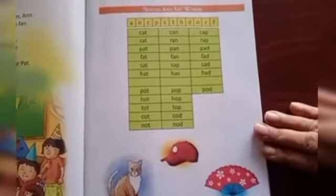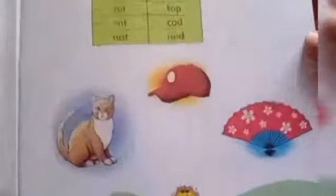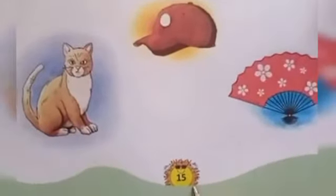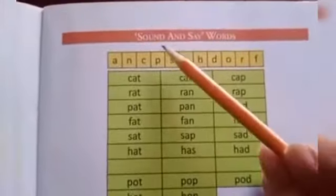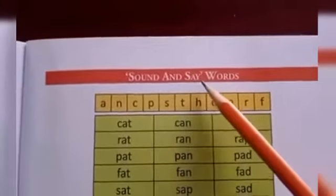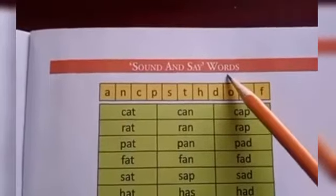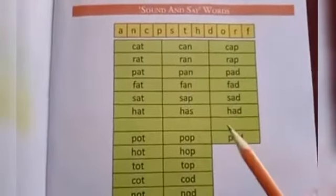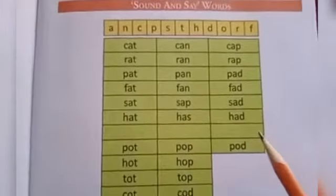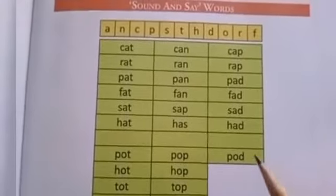Good morning children. It's reading time. Today we are going to read RR book page number 15. So open page number 15 and we will start reading. See what is the heading? Sound and say the words. So there are A and O vowel words on this page. You have to say and read the words. So let us start.